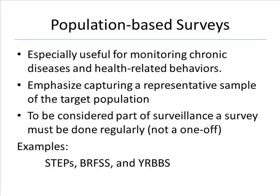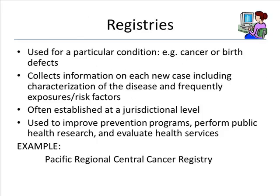The Youth Risk Behavior Surveillance System (YRBSS) by CDC is another example. Slide 31: Registries are used for a particular condition, such as cancer or birth defects. Each new case is recorded including characterization of the disease and frequently exposures or risk factors. Registries have often been established at a jurisdictional level and are used to improve prevention programs, perform public health research, and evaluate health services.